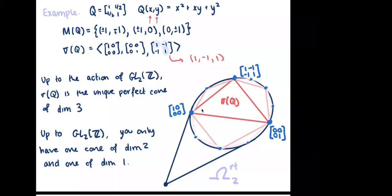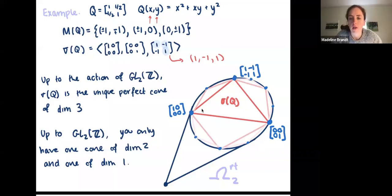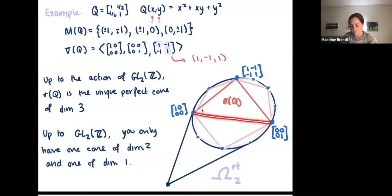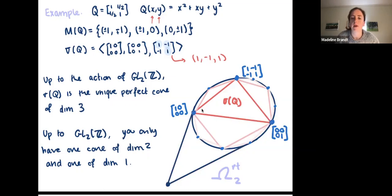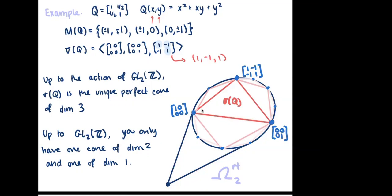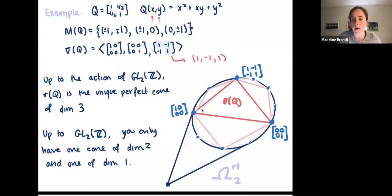Question: Does the 2-dimensional cone correspond to the square lattice, i.e., the quadratic form x² + y²? Response: The cone of dimension 2 is spanned by any pair of the three rays. If you pick two of them, you'd get a form like x² + y². These are the only two-dimensional lattices that have more than two shortest vectors.